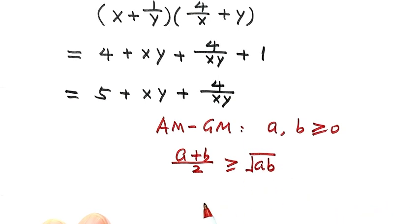So we're going to apply AM-GM inequality for these two terms. So this is like a, this one is like b. Because given both x and y are bigger than zero, so this term is bigger than zero, and this term is bigger than zero.